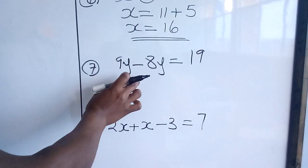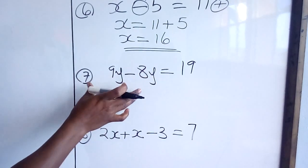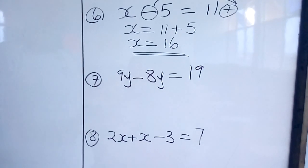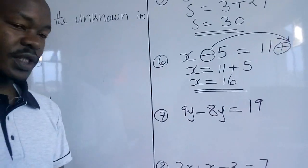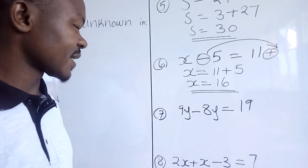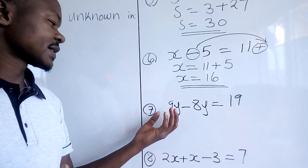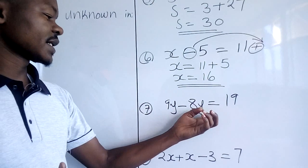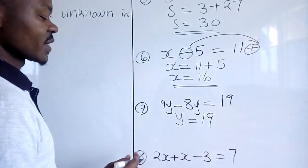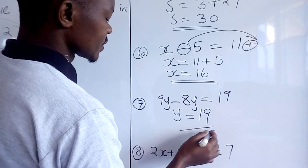Then here we have 9Y minus 8Y is equal to 19. Here, we don't have a whole number — these are like terms. We simply need to solve this one. We have 9Y and 8Y. It's like having 9 mangoes in a basket, then you give 8 mangoes away — how many mangoes will you be left with? It's like saying 9Y minus 8Y, and we shall be left with Y. So Y is equal to 19. And we just stop there, because we are supposed to find the value of the unknown letter, which is Y.